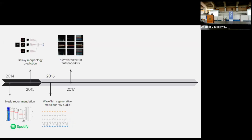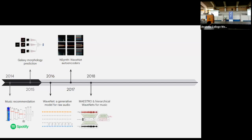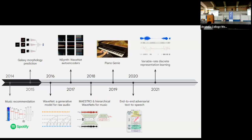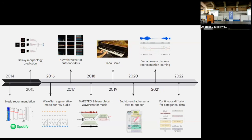I've done collaborations with the Magenta team at Google Brain — now part of Google DeepMind — on music-related work. I've also done work on text-to-speech with adversarial models, representation learning, and most recently a diffusion model for language. The conclusion of that last work was: it kind of works, but it's going to take a while before we can dethrone autoregression. That's a summary of my eight years at DeepMind and my PhD.